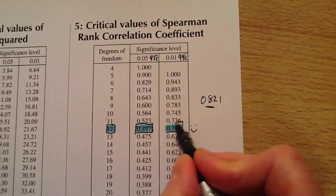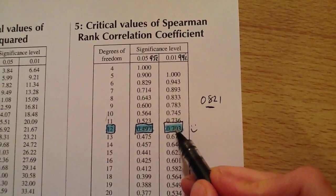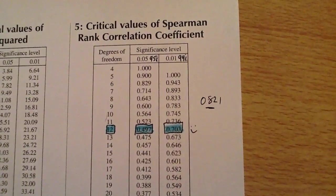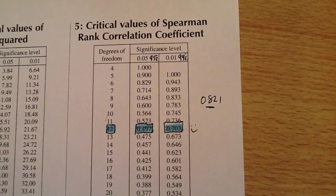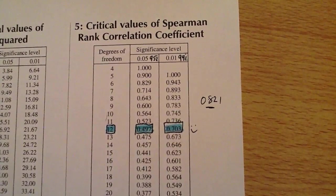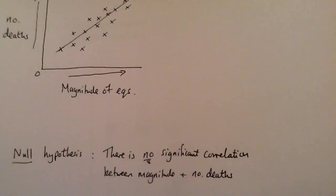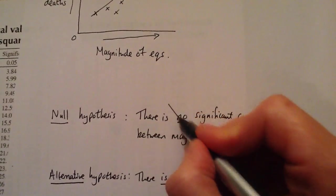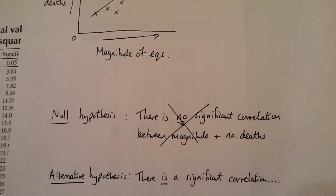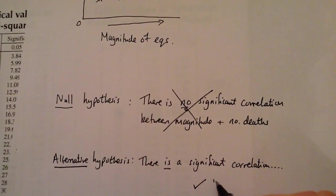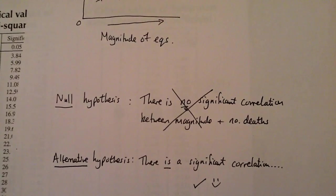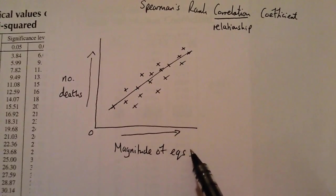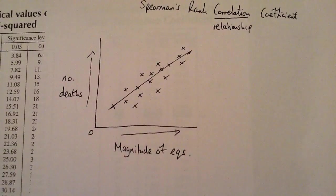We can go one step further. If our answer is more than the second critical value shown here, we can be 99% sure our result isn't due to chance and we can reject our null hypothesis. Returning to our results, we can reject our null hypothesis and accept our alternative hypothesis: that there is a significant correlation between magnitude of earthquakes and number of deaths. And that is how Spearman's rank works.